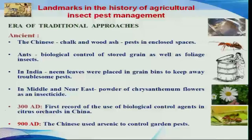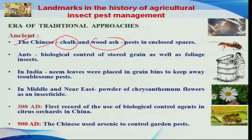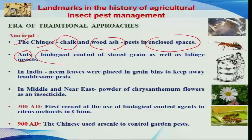Before going to concepts of pest management, let us visualize how our ancestors followed some of the practices for the management of insect pests, both in stored grain pest management and also in open fields. In earlier days, the Chinese were pioneers in use of chalk and wood ash for the management of important insect pests in enclosed spaces. Similarly, they were probably the first to use ants as a biological control agent for both stored grain pest management and also foliage feeding insects.